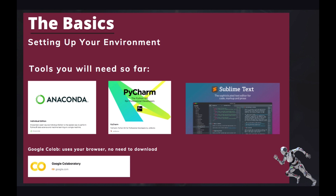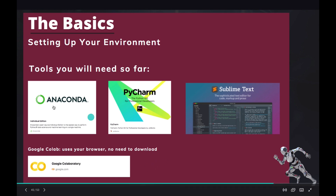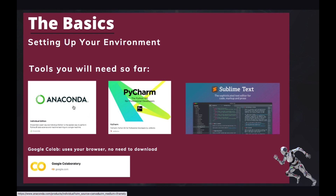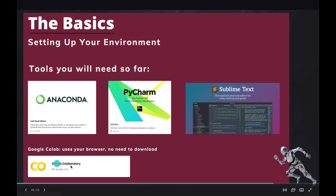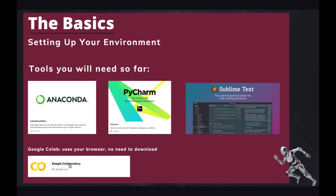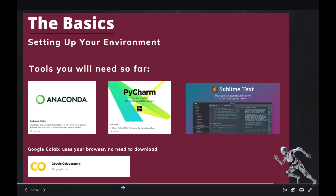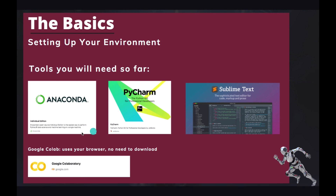We're going to need these tools that you can see on your screen: Anaconda, PyCharm, Sublime Text, and also Google Colab. Some of the time I'll be doing coding in Anaconda using Jupyter Notebook or Jupyter Lab, and sometimes I'll be using Google Colab — most of the time Google Colab. They are all the same; you can use either of them. When we get to the deployment part, we're going to need PyCharm and Sublime Text, but for now we're going to need Anaconda and Google Colab.